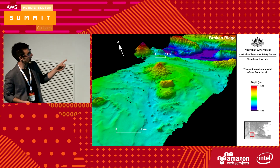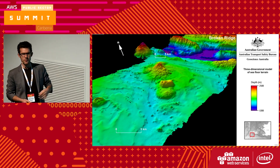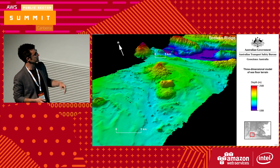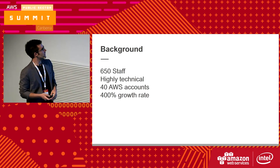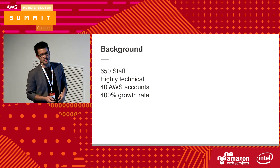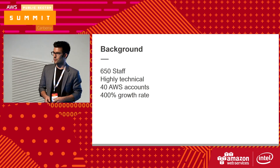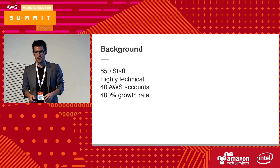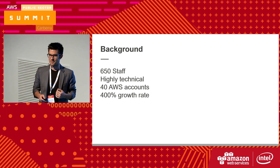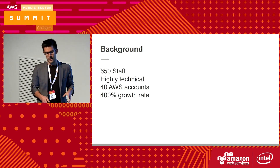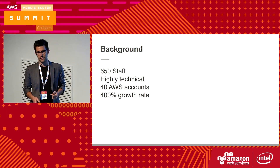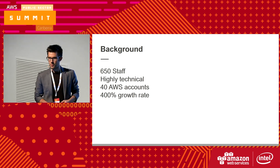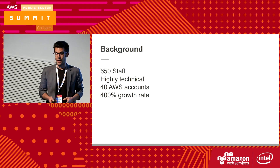So you would have seen us in the news about MH370. We were involved in the collection of data for MH370, and this is some of the visualization from that. So GA, we've got around 650 staff — they're all really technical. I've never seen so many PhDs in all my life; I'm the only person in the room without a PhD sometimes. We've got about 45 AWS accounts as of today — we added five since these slides got made — and we've had a 400% growth rate in the last two years in our AWS spend. We're creating new accounts all the time.